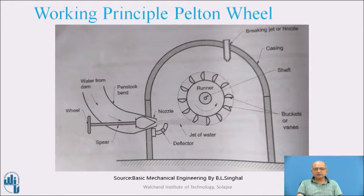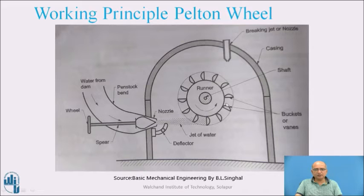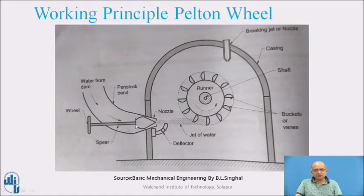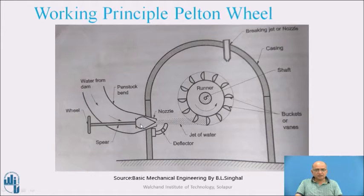The runner along with the buckets is covered by a simple cover, which is not a sealed cover like in reaction turbines. This portion shows the cover. This is the shaft for the turbine. This is the runner portion on which the buckets are mounted — these are the buckets or vanes with a curved shape. This is a spear, which is used to control the flow of water impinging on the buckets. This is the deflector, used for deflection of the water flow. The spear is installed at the end of the pipeline, which is called the penstock or penstock bend.